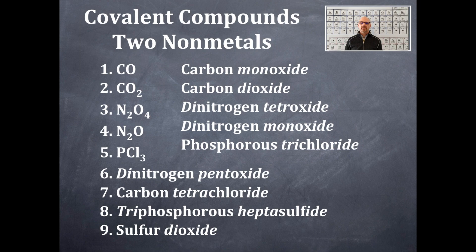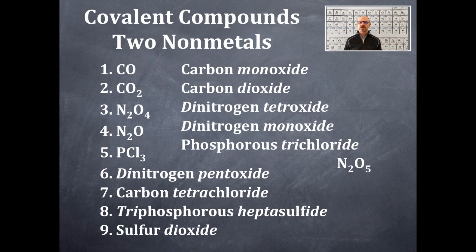Now that we've gone from formula to name, we're going to go in the reverse direction — from the name to the formula. The first one in this series is number six: dinitrogen pentoxide. Di is for two, so the first element is nitrogen with a subscript 2. The second element is oxygen because of the oxide portion. And how many oxygens? Penta — which is five. So it's N2O5.